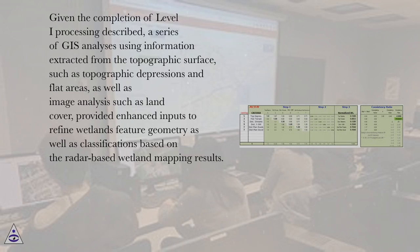Given the completion of Level 1 processing described, a series of GIS analyzes using information extracted from the topographic surface, such as topographic depressions and flat areas, as well as image analysis such as land cover, provided enhanced inputs to refine wetlands feature geometry as well as classifications based on the radar-based wetland mapping results.